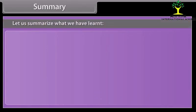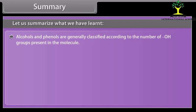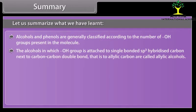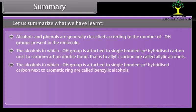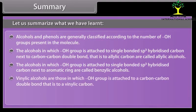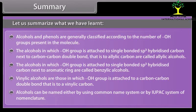Summary: alcohols and phenols are generally classified according to the number of hydroxyl groups present in the molecule. Allylic alcohols are those in which the hydroxyl group is attached to a single-bonded sp3 hybridized carbon next to a carbon-carbon double bond. Benzylic alcohols are those in which the hydroxyl group is attached to a single-bonded sp3 hybridized carbon next to an aromatic ring. Vinylic alcohols are those in which the hydroxyl group is attached to a carbon-carbon double bond. Alcohols can be named either by the common name system or by the IUPAC system.